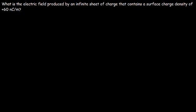Surface charge density is equal to the total charge divided by the area. But let's continue with the problem. How can we use Gauss's law to come up with a formula for the electric field produced by this infinite sheet of charge?